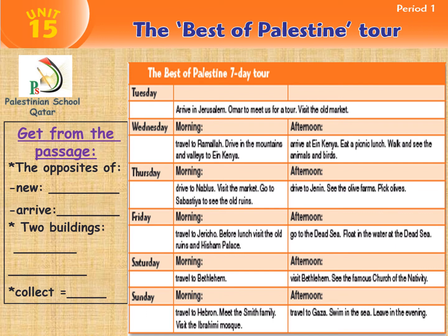Look at the table, read and answer: the opposite of 'new' — yes, very good, old. 'Arrive' — leave. Two buildings — yes, very good: mosque and church. A word that means 'collect' — yes, pick. Very good.